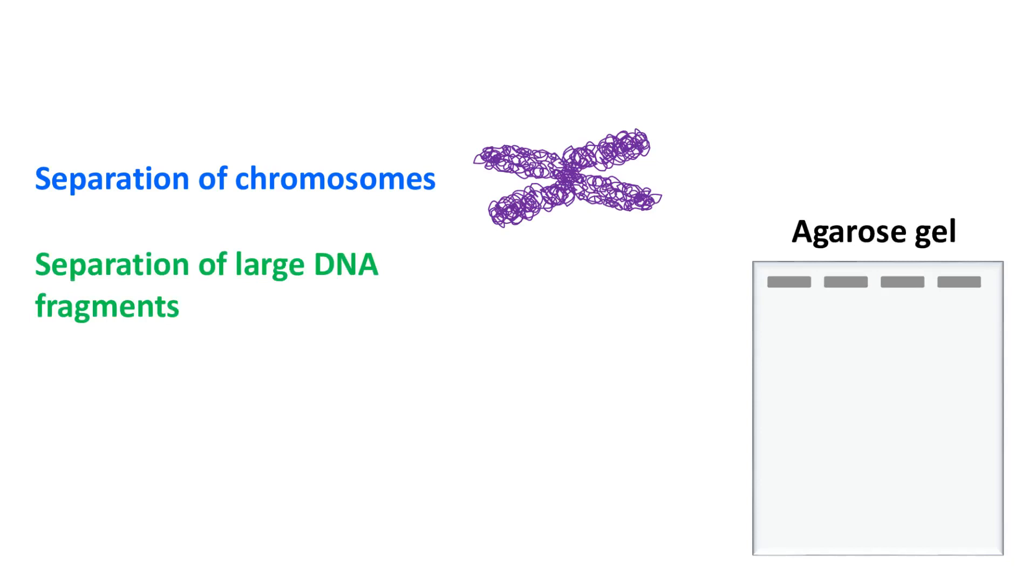The agarose gel is a porous gel. As a result, the separation of DNA occurs on the basis of its size. Small DNA fragments will travel long distance whereas large DNA fragments travel a short distance.